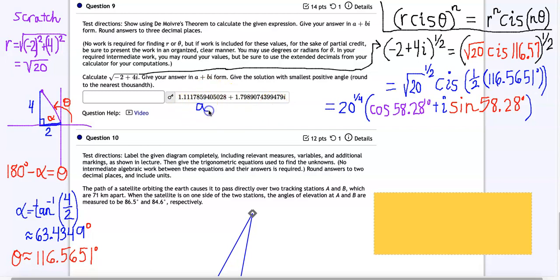To get a, this is a, we're going to use the distributive property here. We have to distribute 20 to the one-fourth to the purple. And then to get b we use the distributive property again, this time distribute 20 to the one-fourth to the red. So this would be a, this would be b. These curves and labels are not work that you would show on the test. I'm just doing that for the sake of explanation. So once you multiply 20 to the one-fourth times cosine 58.28 that is equal to 1.1117 etc.